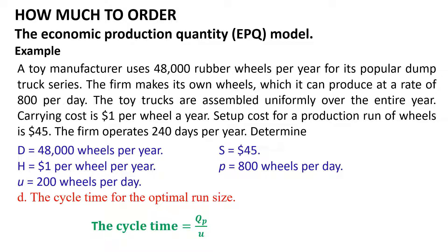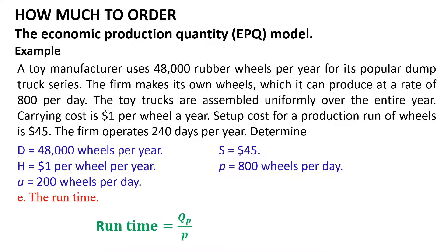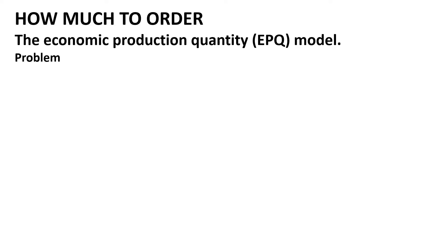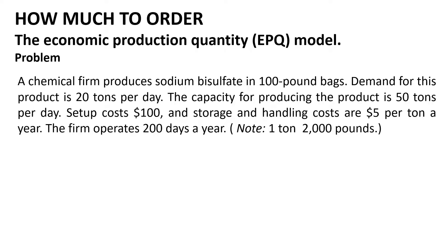The fourth question is the cycle time for the optimal run size, which equals Q_p / u = 2,400 / 200 = 12 days. The last question is the run time, calculated by dividing the optimal run size by the production rate: Q_p / p = 2,400 / 800 = 3 days.